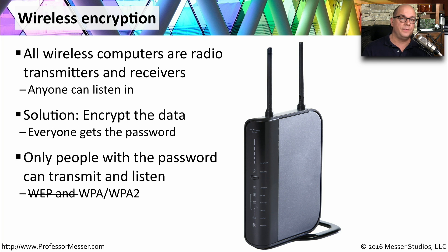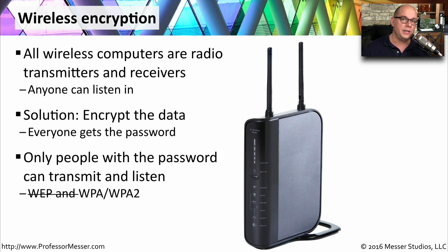In a small office or a home office, everyone is provided with the access password to the wireless network, and they can then communicate and send information in an encrypted form. We used to see options to encrypt like WEP, but today the encryption type you should always be using on a wireless network is WPA or WPA2.